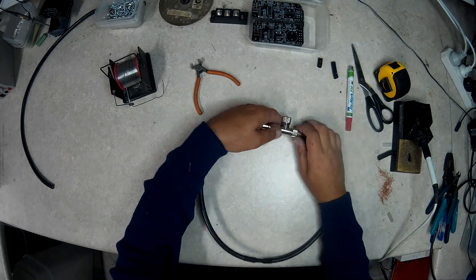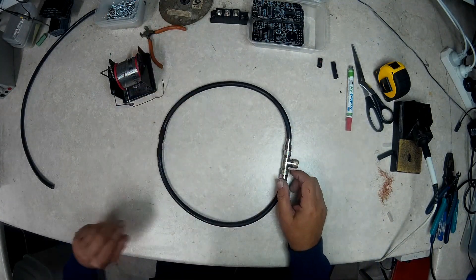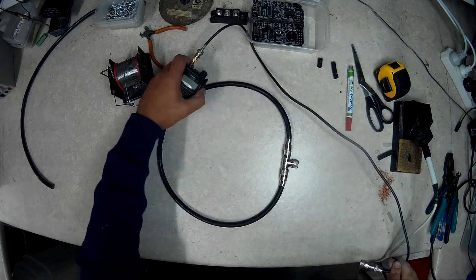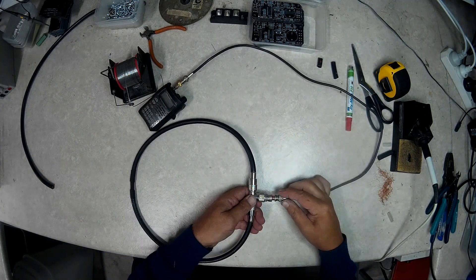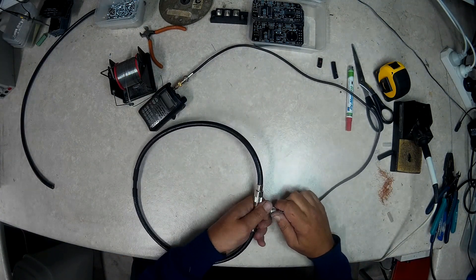With the receiver connected to the center of the T, we have created a non-resonant balanced loop that will produce a decisive null in the interference signal when it is held 90 degrees to the noise source.